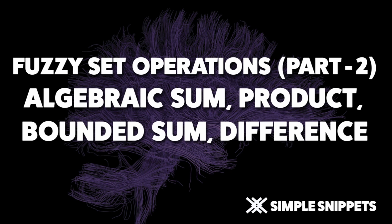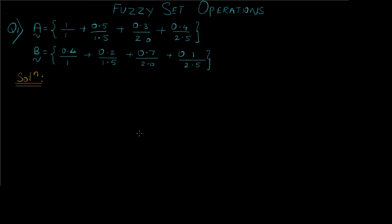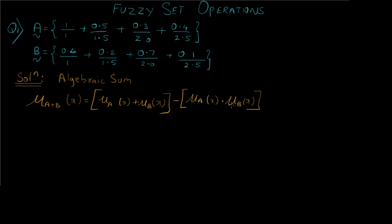Let's get to the numerical. As you can see on the screen, I have two fuzzy sets A and B, with each of the values listed. The first fuzzy set operation is algebraic sum. The algebraic sum formula is given by this formula — we are first going to take the addition of the upper values, then subtract the result from their multiplication.